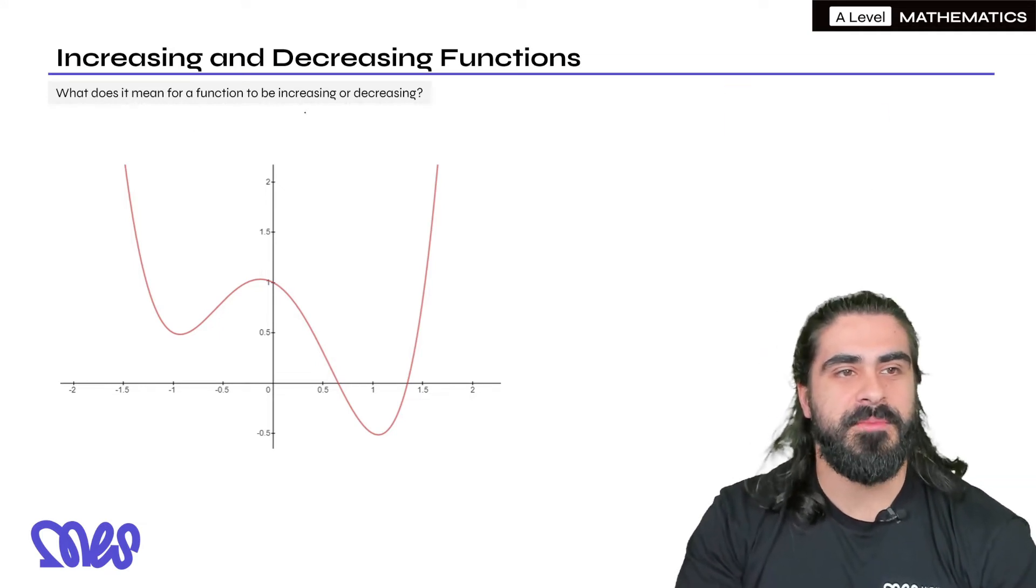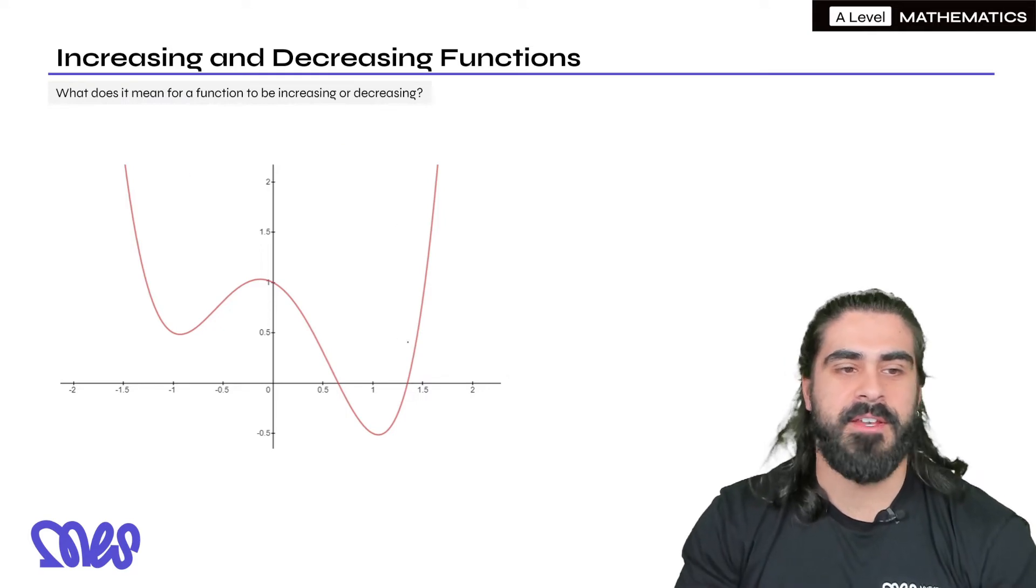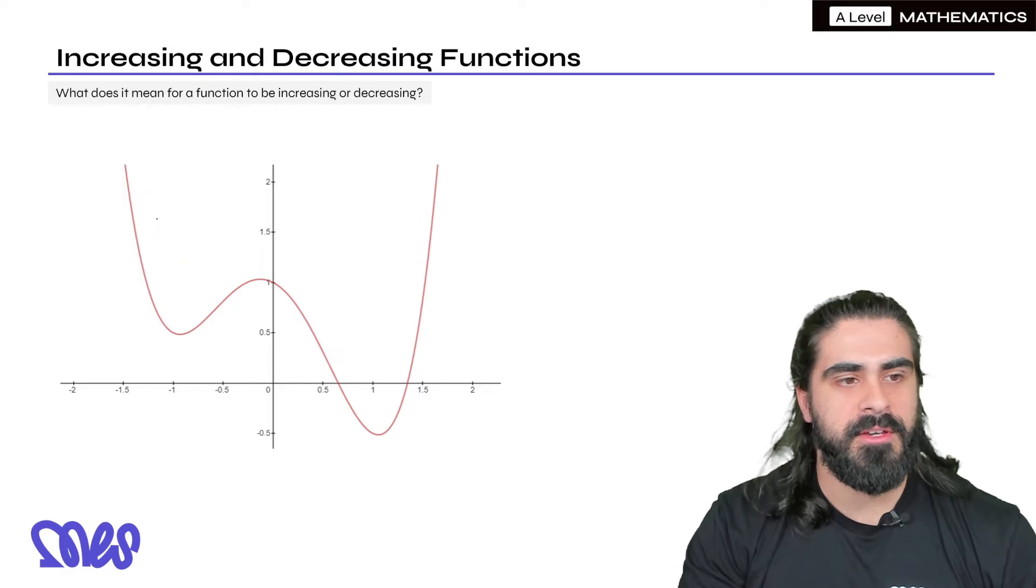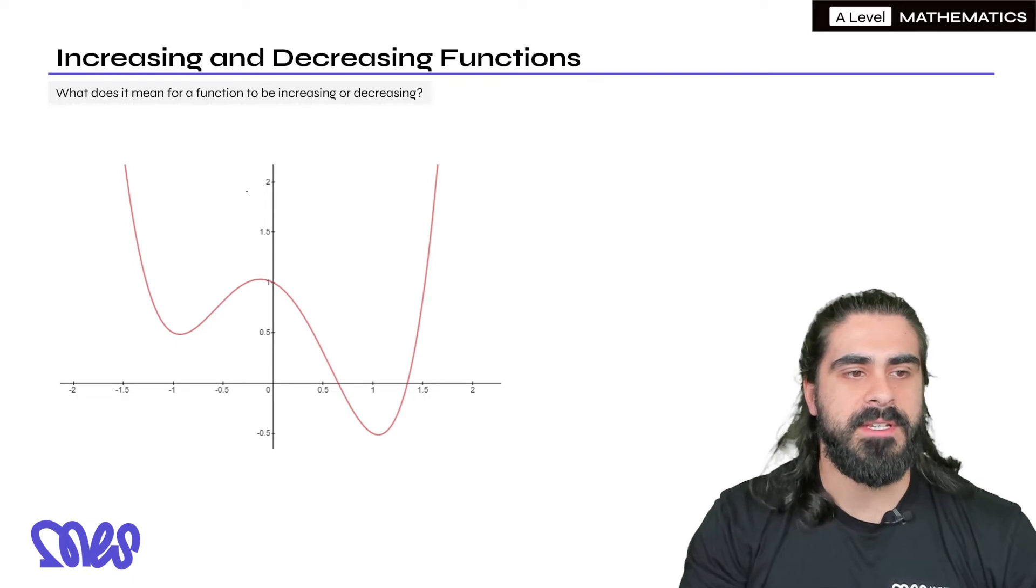What does it mean for a function to be increasing or decreasing? Now let's look at this picture. Just have a random function. Which parts do you think would be an increasing function where the graph is increasing and where would it be decreasing?